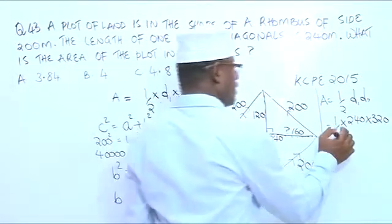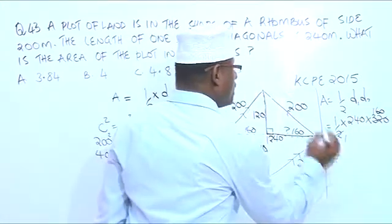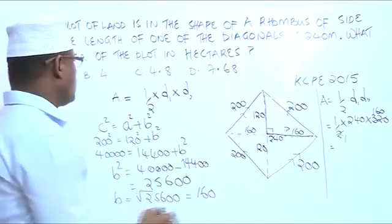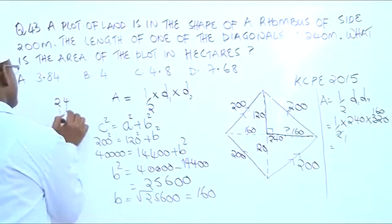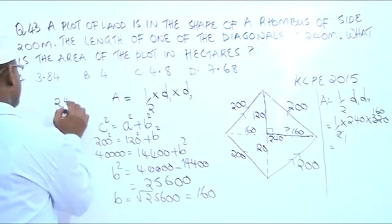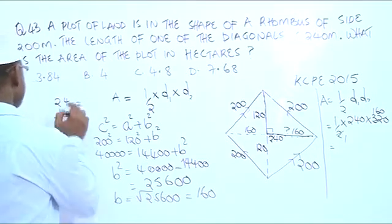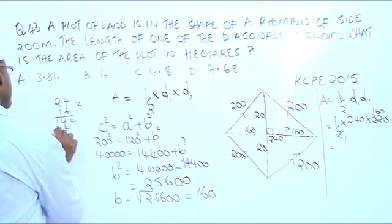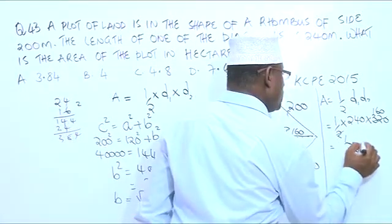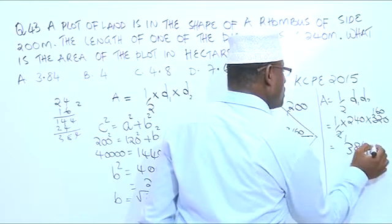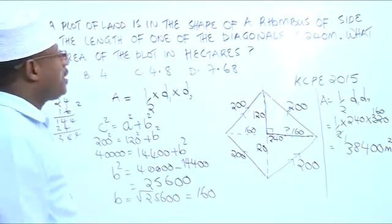Now, 240 times 160: we calculate 24 times 16. Four times 6 is 24, carry 2; 2 times 6 is 12 plus 2 is 14. Then 4 times 1 is 4, 2 times 1 is 2, giving us 384. With two zeros from the original numbers, that gives us 38,400 meters squared.